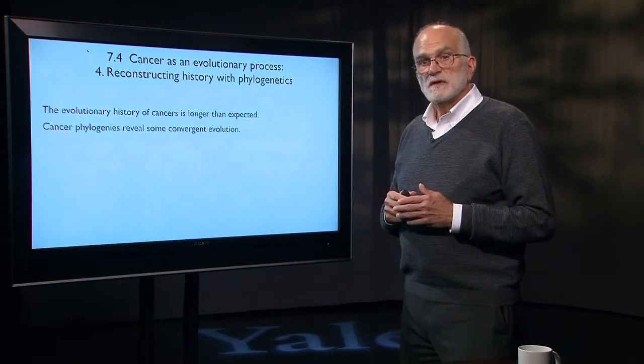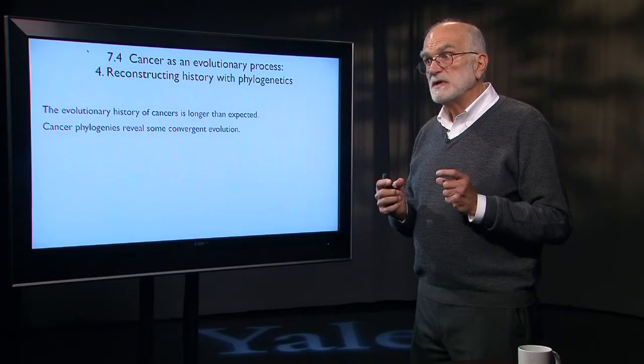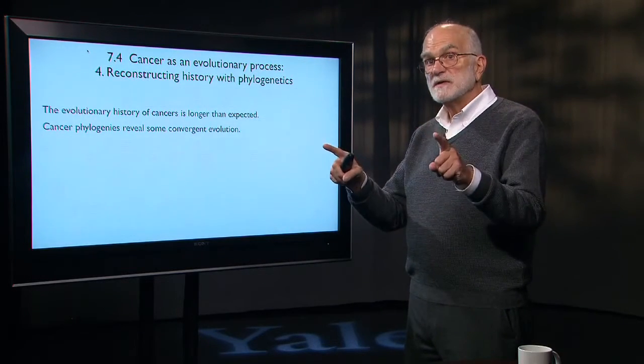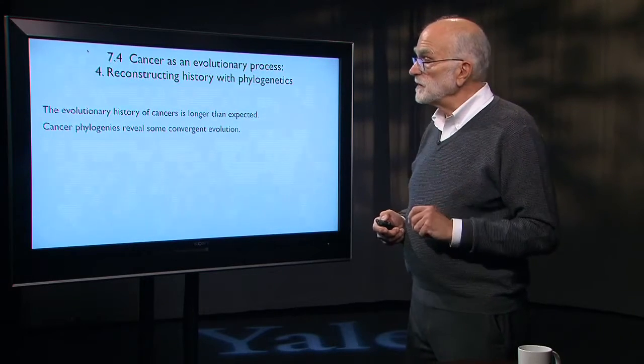When we look into these phylogenies, they can show convergent evolution. That means that different branches adapt in similar ways independently of each other. That's a signal that selection is going on.